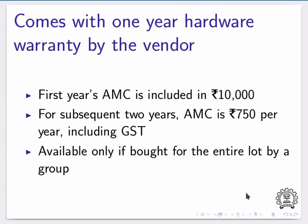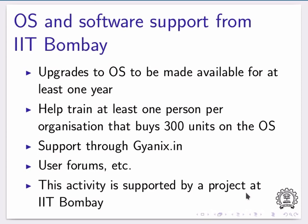This comes with a 1-year hardware warranty by the vendor, and the first year's annual maintenance cost is included in the Rs. 10,000. For subsequent 2 years, AMC is Rs. 750 per year including GST, available only if bought for the entire lot by a group. OS and software support are from IIT Bombay, with upgrades to the OS to be made available for at least 1 year. IIT will help train at least 1 person per organization that buys 300 units. Support is available through the website yannix.in and user forums. This activity is supported by a project at IIT Bombay.